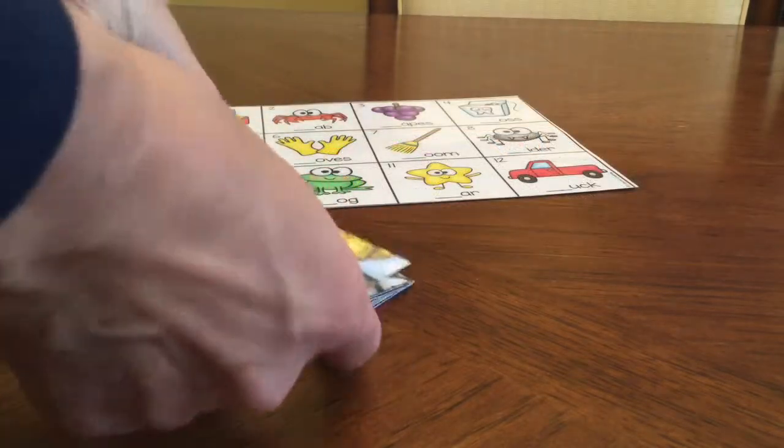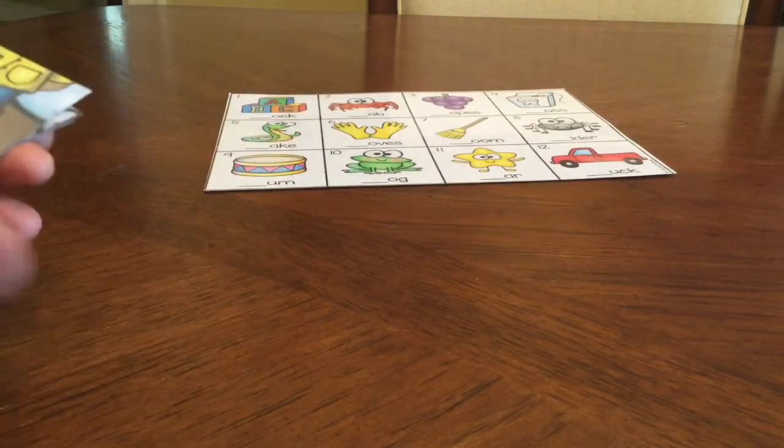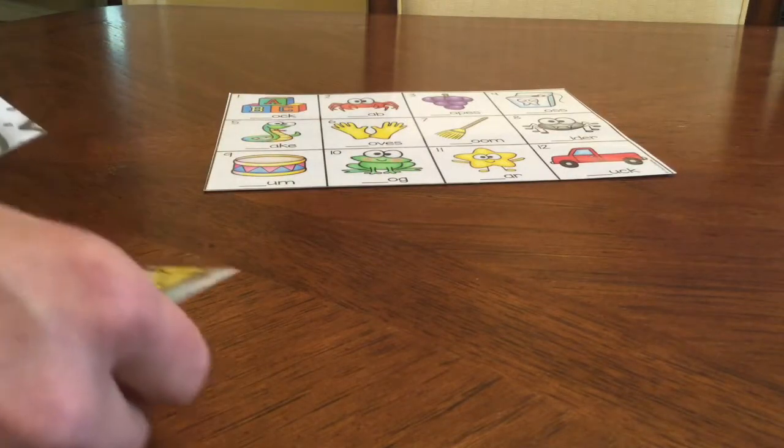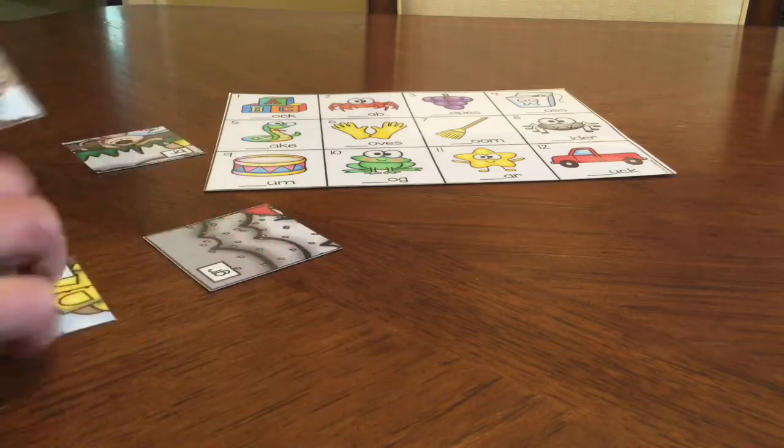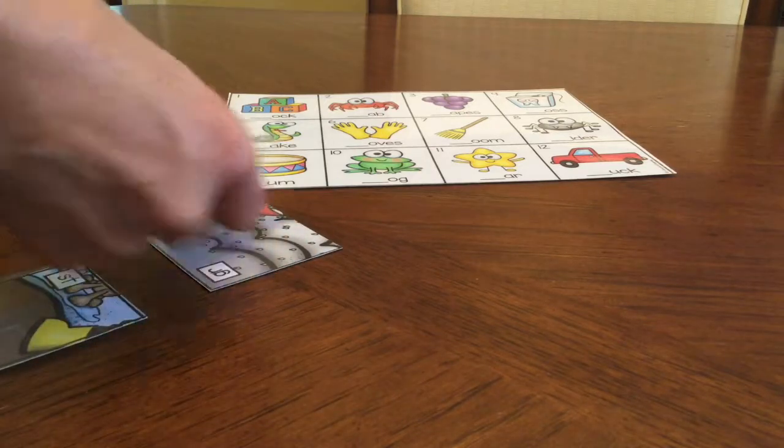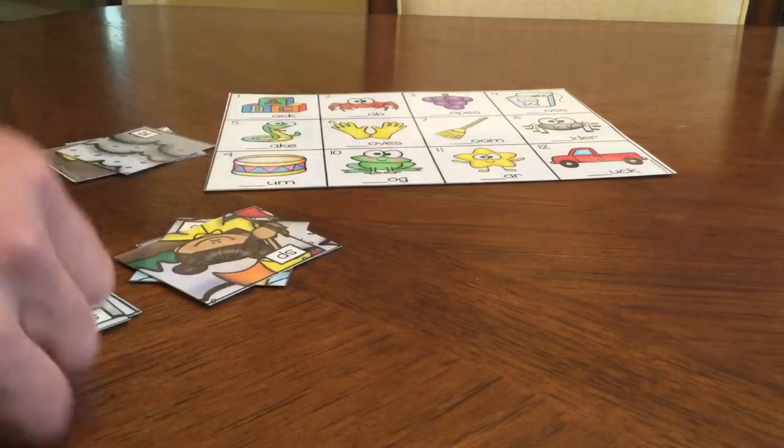After you do that, you need to take these little cards and you need to divide them evenly between the students that are working in this group. So if we had three students working together, we would give each student an equal number of cards by dealing them out, just like I'm doing here.